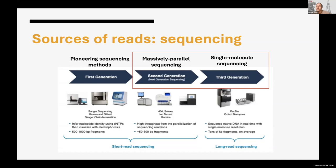Ion Torrent is another technology — I did an internship there about ten years ago when they were just starting. It's interesting to observe sequencing technology companies because as they make claims working with toy examples, you realize there are physical limitations which some can be overcome and some cannot. Ion Torrent was not able to increase read length as well as reduce error rates, and error rates were higher than Illumina, so people did not widely adopt it. Illumina remains the most widely used technology.